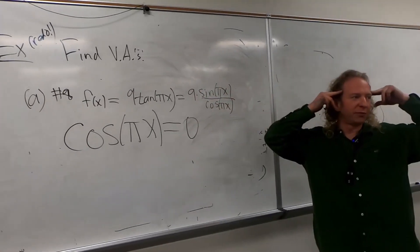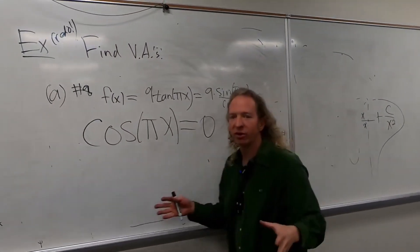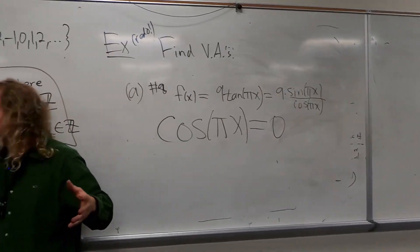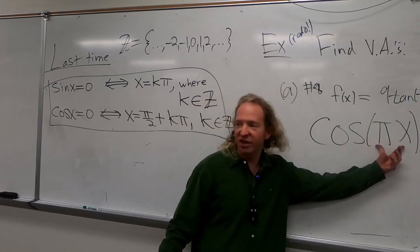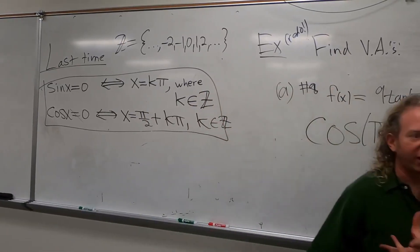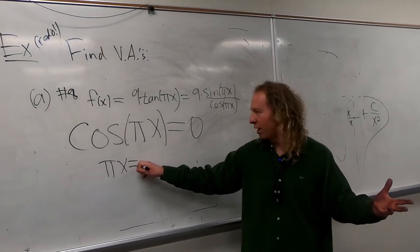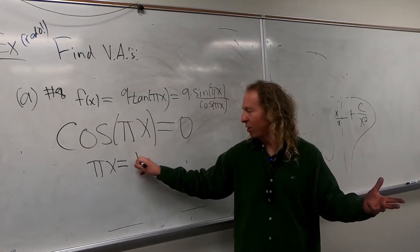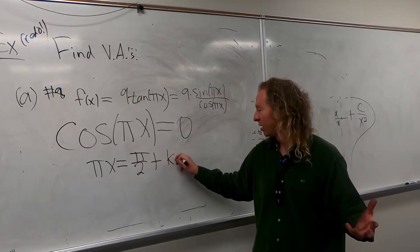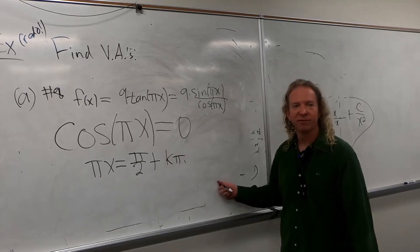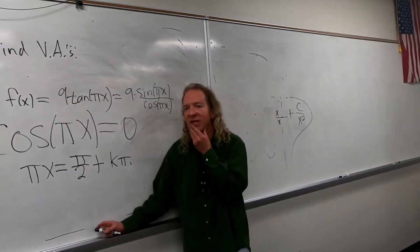It's a logical move. It's like we're thinking, when is this undefined? It's undefined when the bottom is 0. So cosine of x equals 0 when x is equal to pi over 2 plus k pi, right? So you just take this whole thing. So pi x equals pi over 2 plus k pi. Any questions on that step?